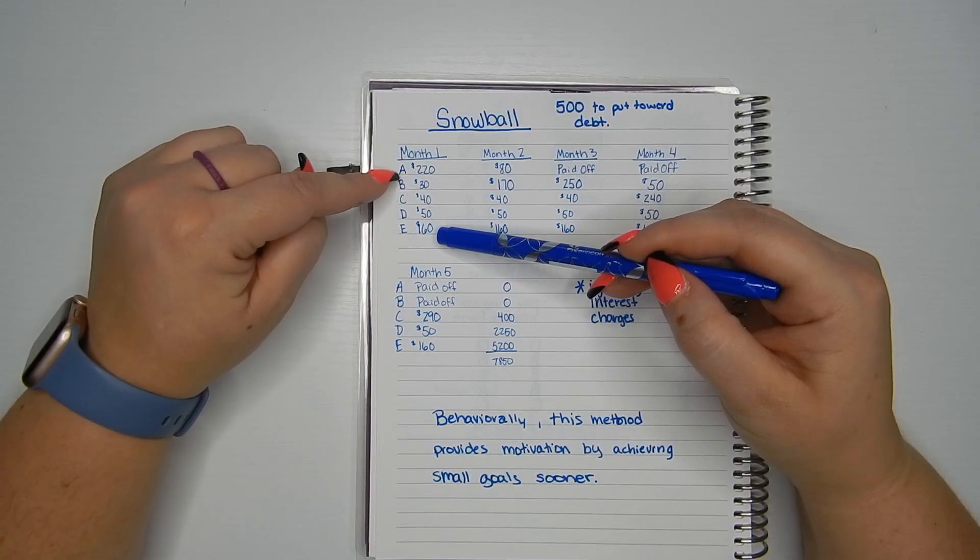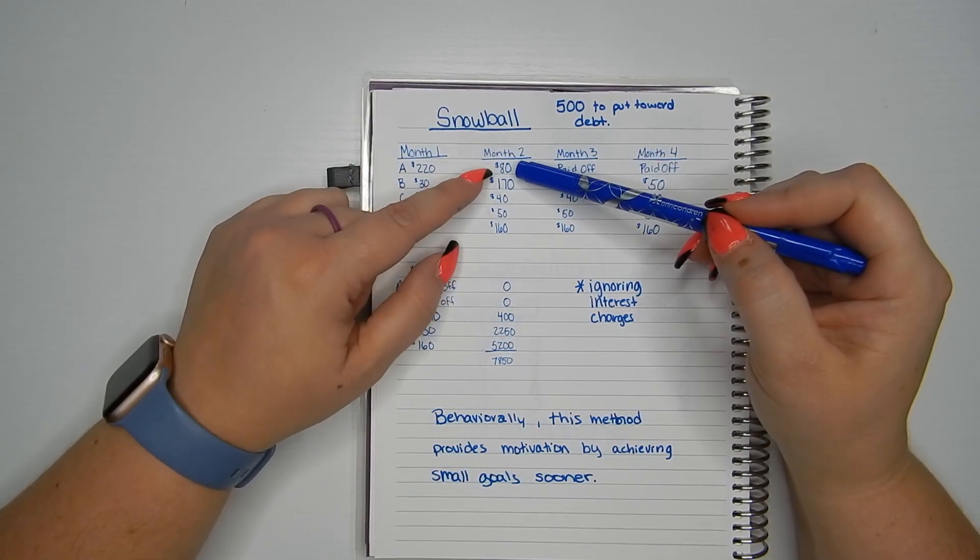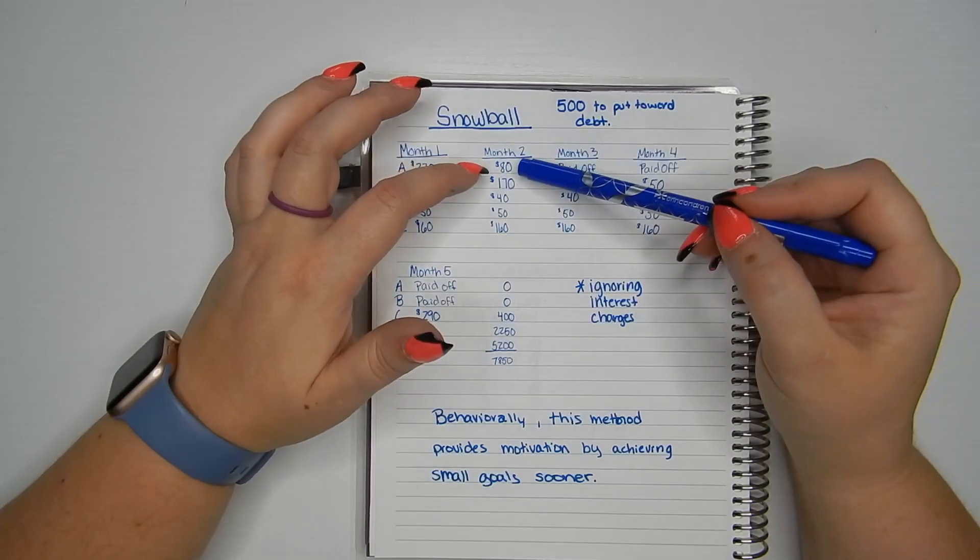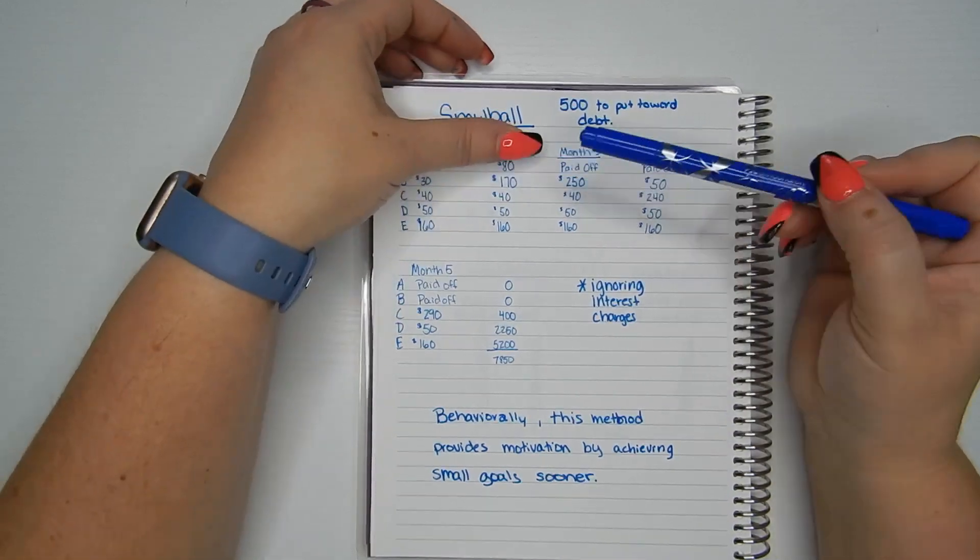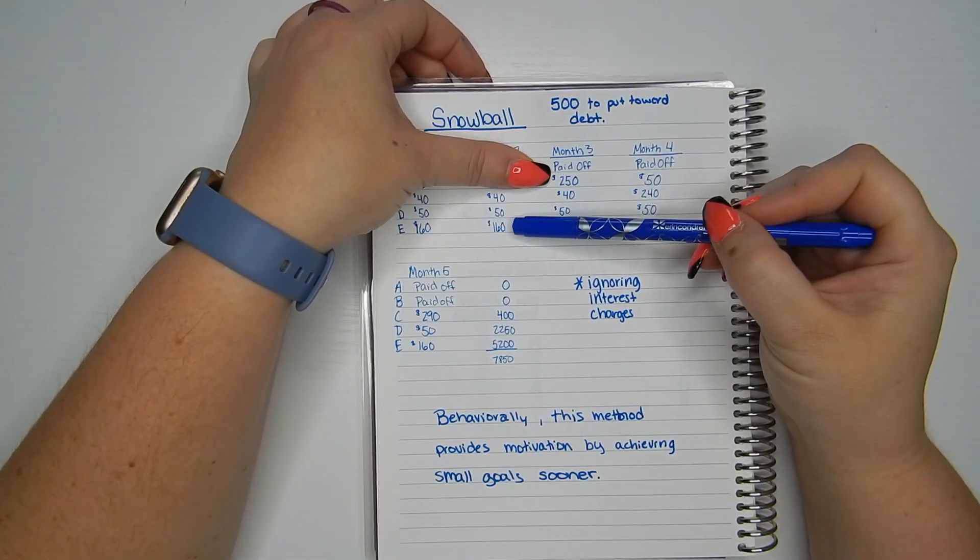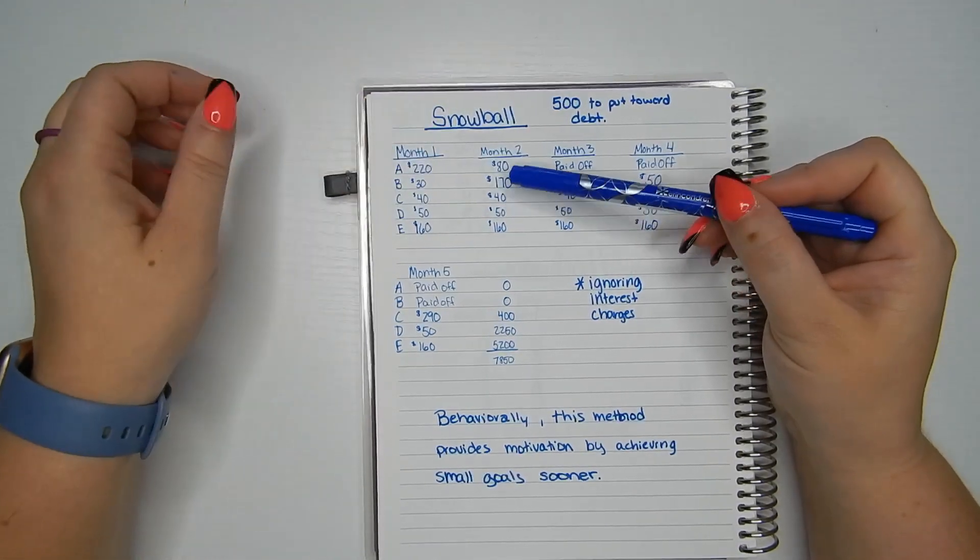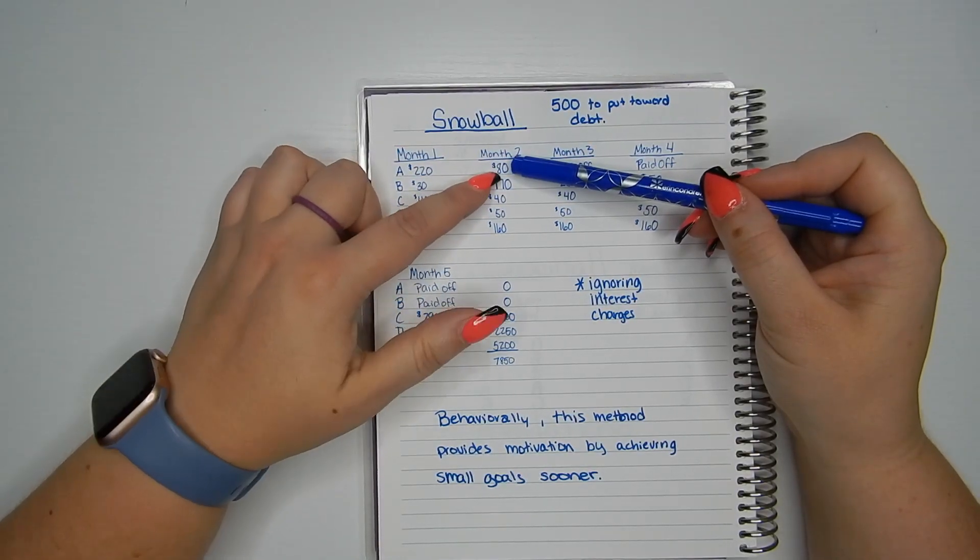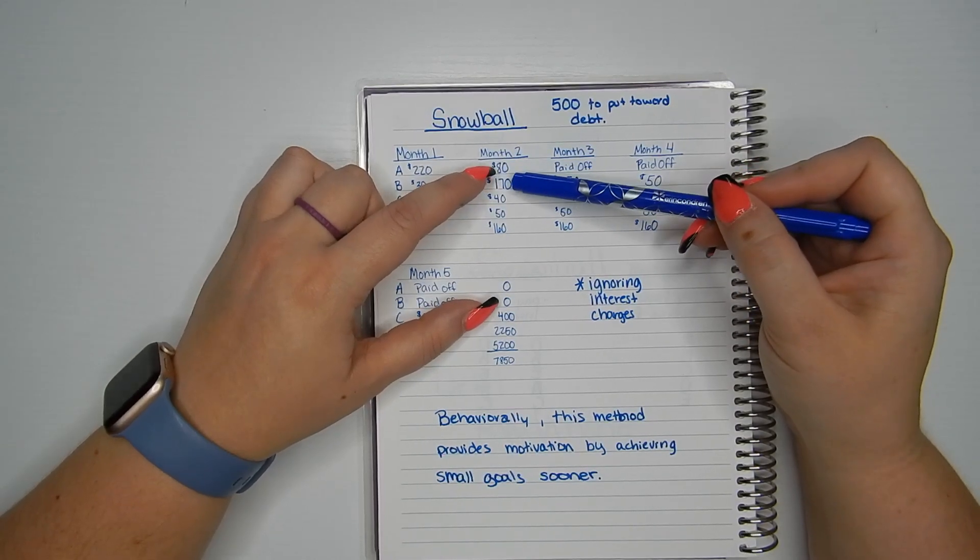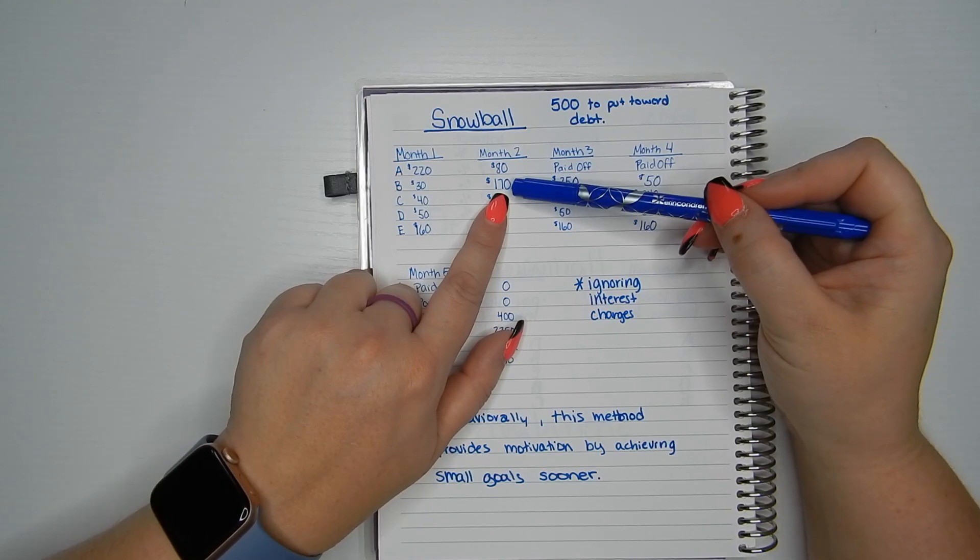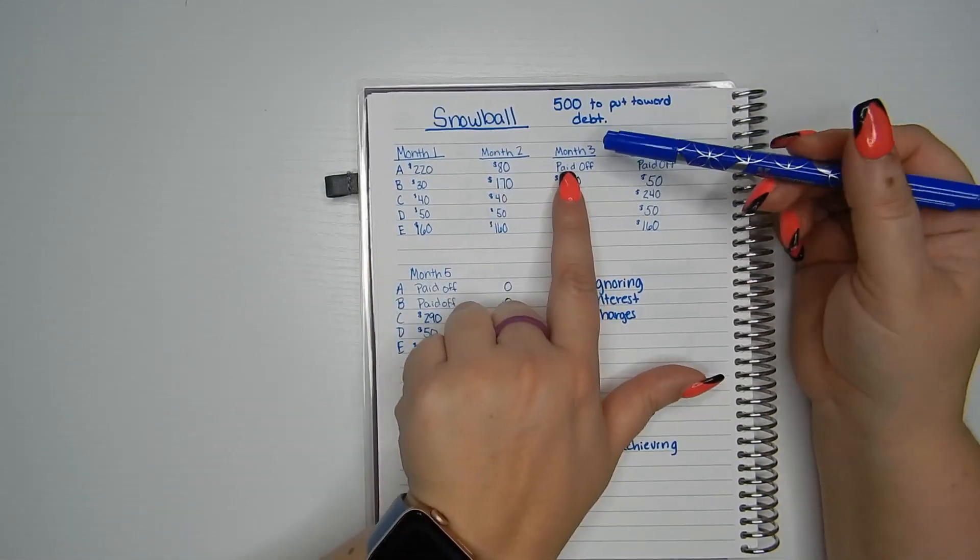Now month two, remember card A only had a $300 balance. So I really only have $80 left to pay on card two. So you're already seeing a victory. It's month two and you're already knocking out one of your credit cards. So then we go back again. Minimum balance for card E was $160. Card D was $50. Card C was $40. And I knew card A I only had to pay $80 towards and it would be paid off and gone. So I took everything extra that I was paying on card A and started paying off card B. So I'm going to put $170 towards card B.